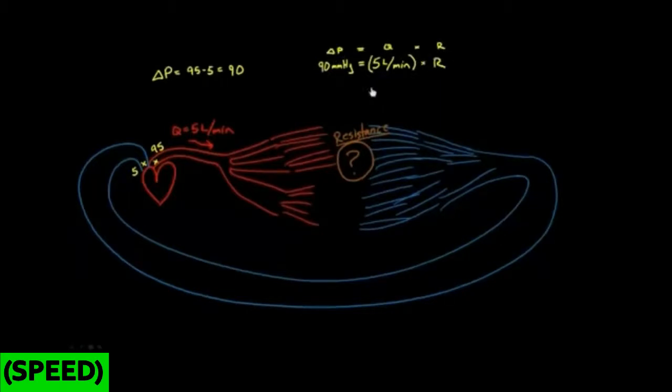So let's just solve for R. So I'll move my flow to the other side, so R equals—I'll put it here—90 divided by 5, which is 18. And the units are a little funky, but I'll just write them out anyway: millimeters of mercury times minutes divided by liters. So this is the answer to my question, what is the total body resistance?